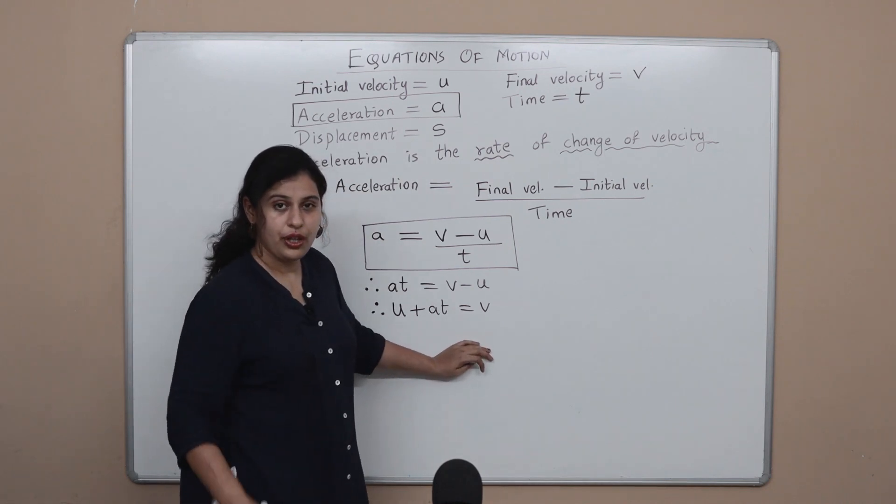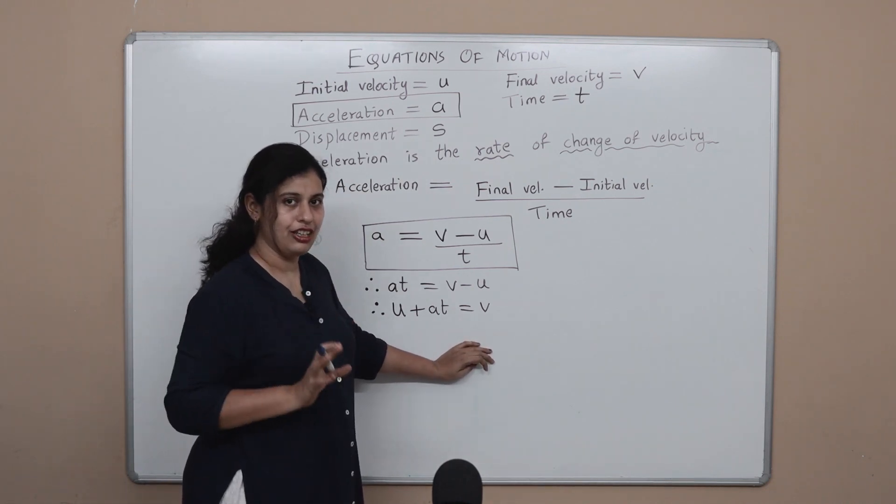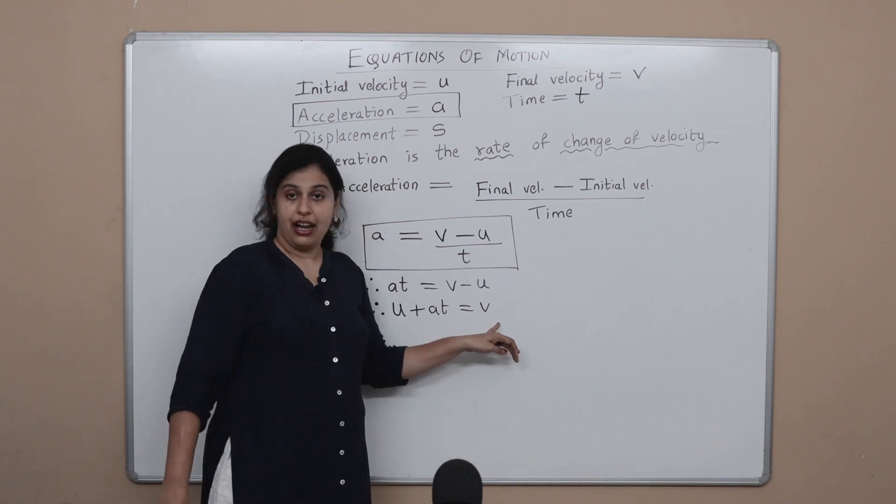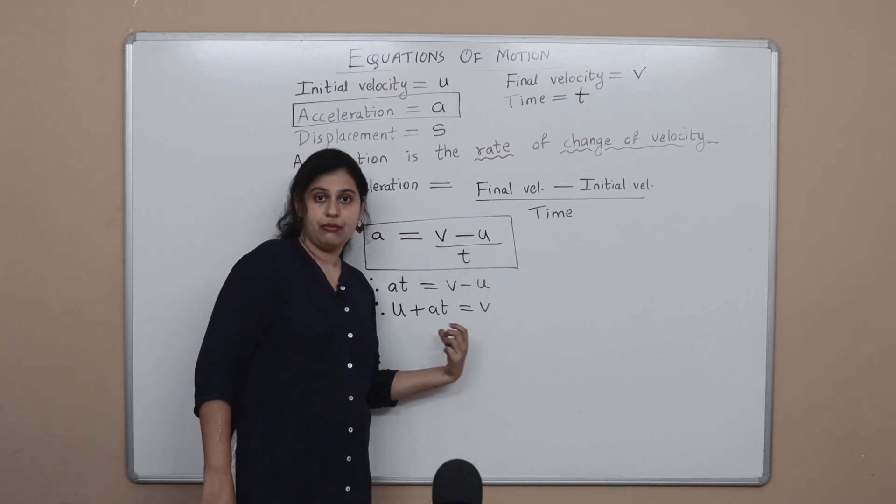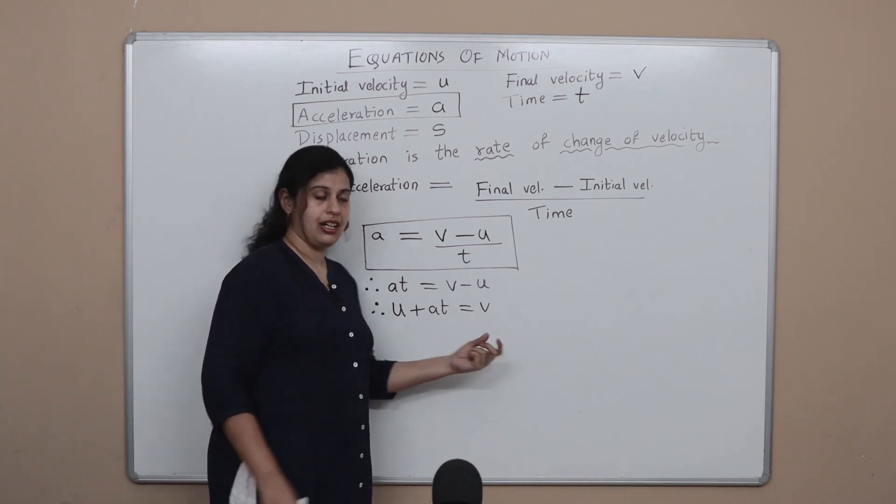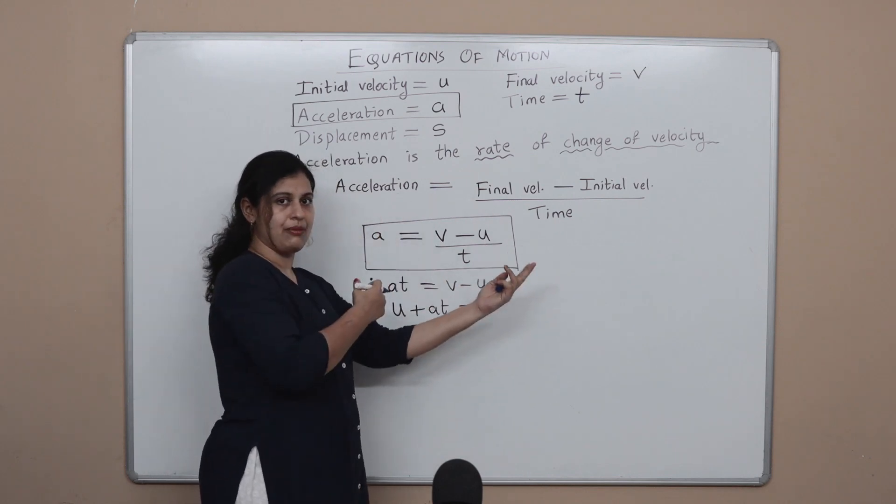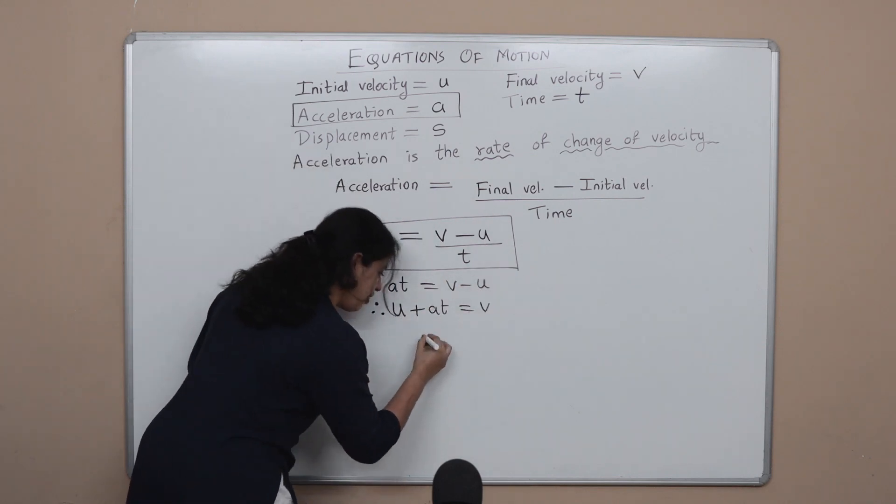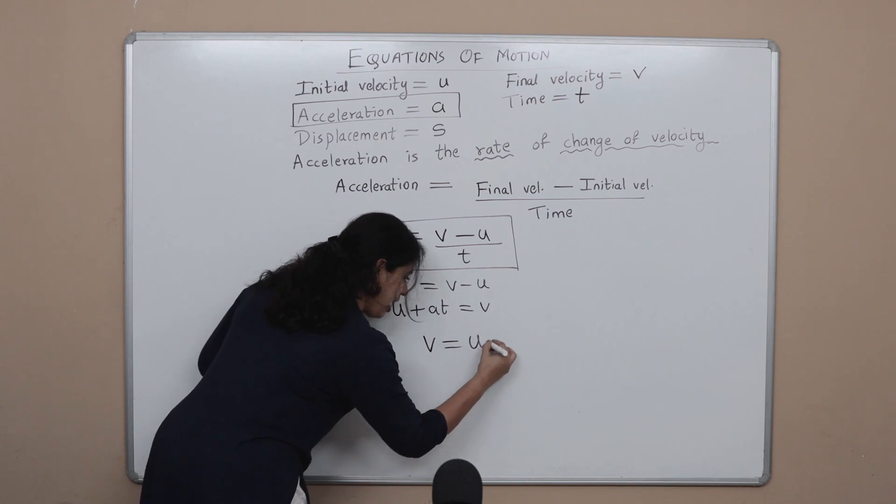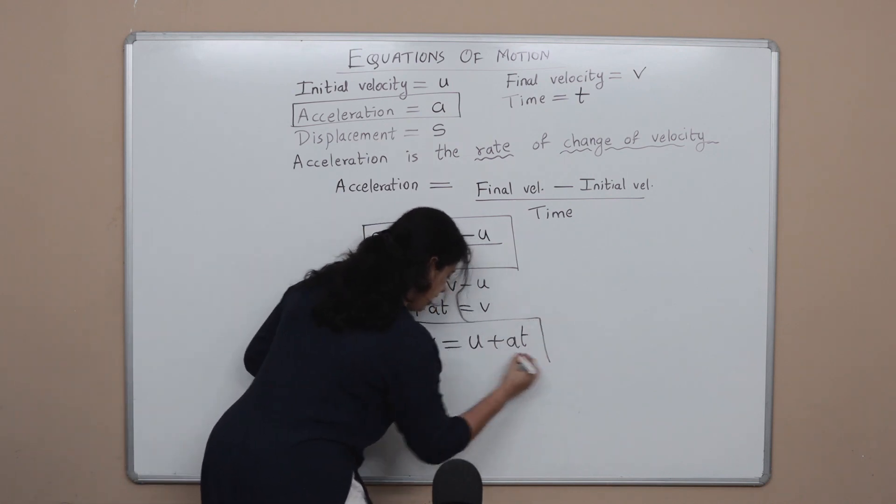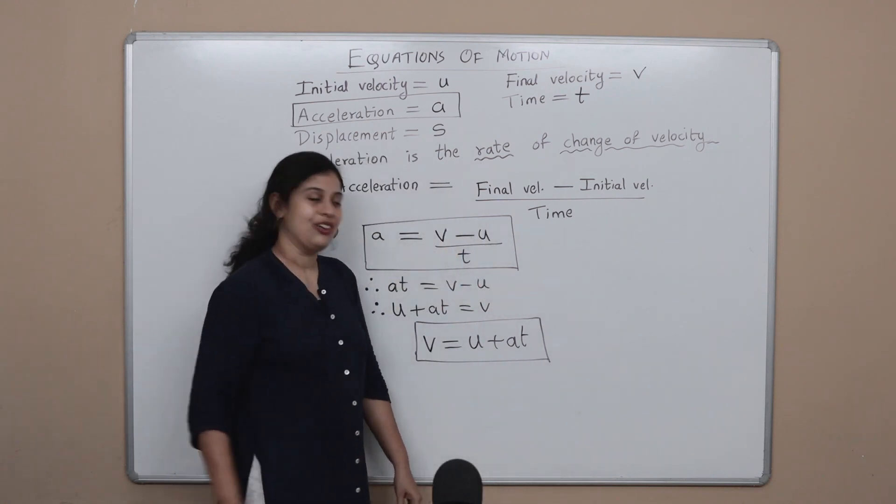We are there, we are just going to put it into its last and final form. The final form says we have one variable to the left and everything else to the right, so what do we do? We just make them switch sides and voila, we have our first, very first equation of motion.